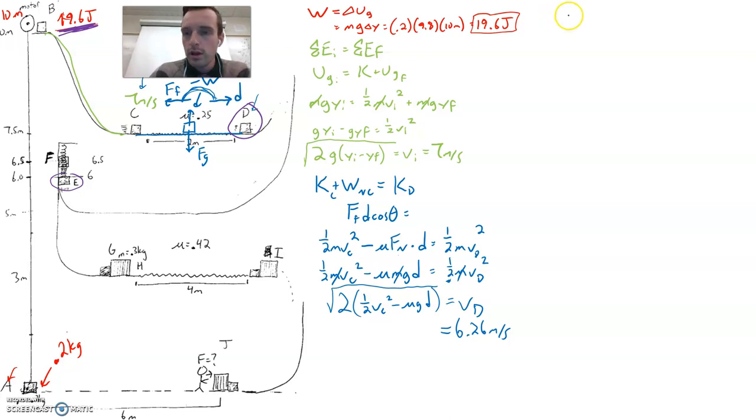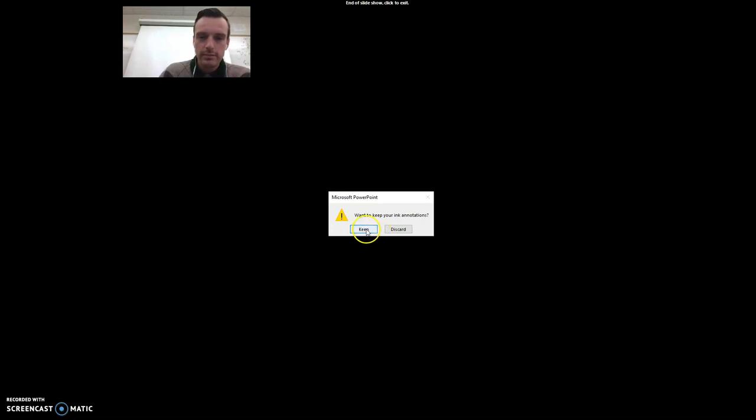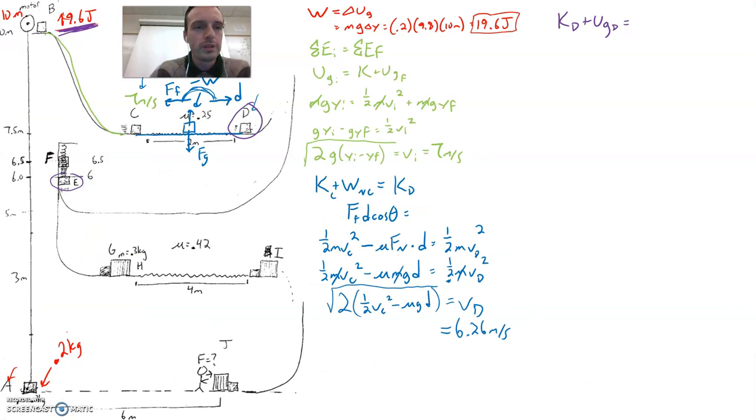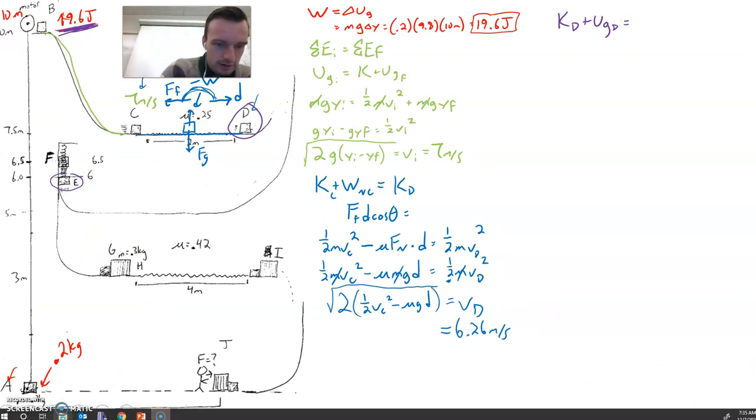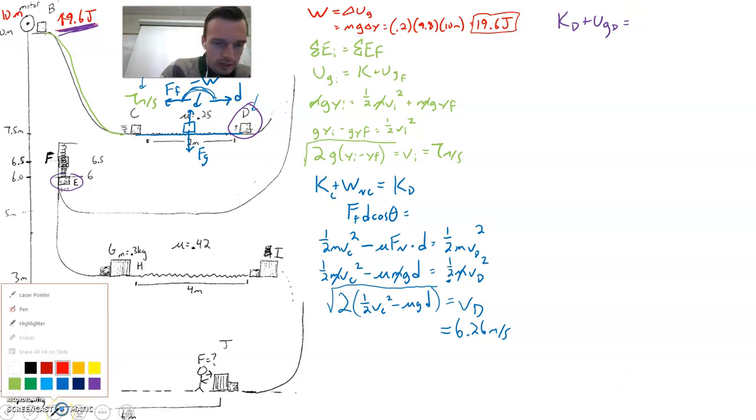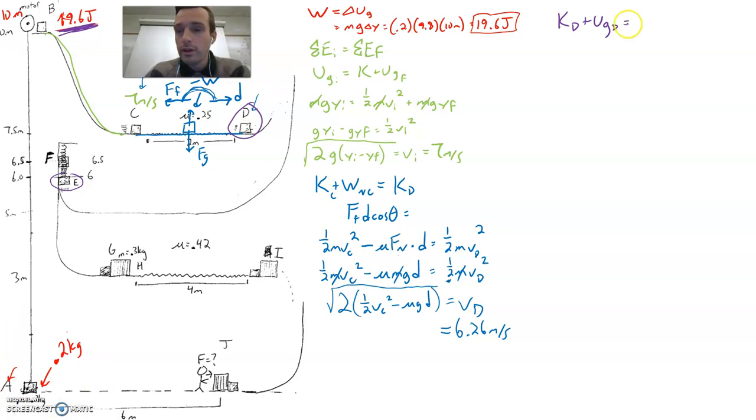What we can say for sure is at point D we are moving. So we have kinetic energy at point D. And we also have potential energy at point D. And then at point E, we are moving and we also still have potential. Why? Because we're not on the ground yet. So we are moving at point E and we are not on the ground yet. All we have to do is plug a bunch of stuff in.